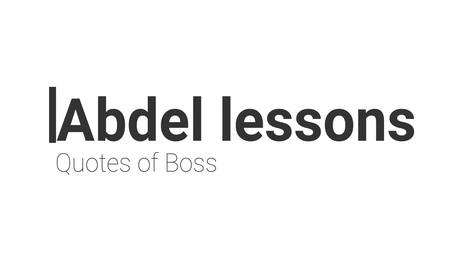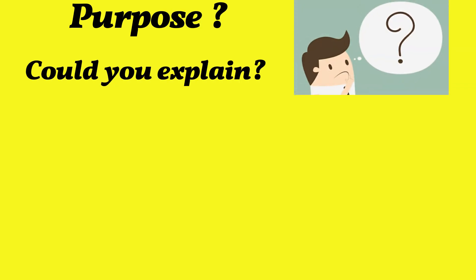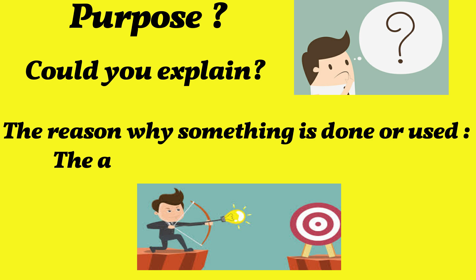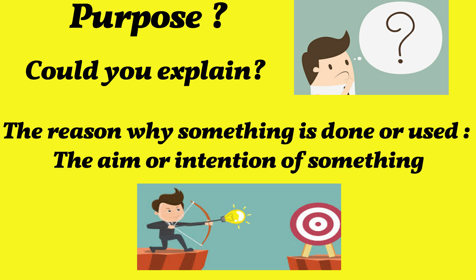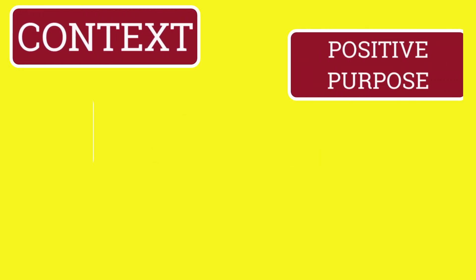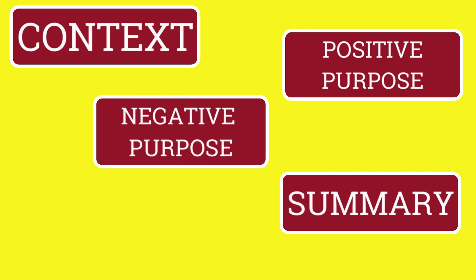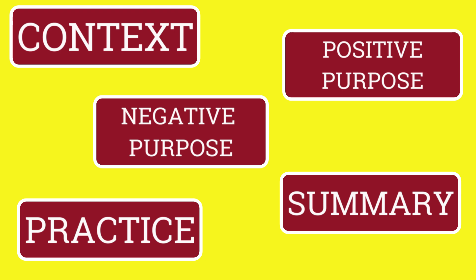Hi everyone, and welcome back for another lesson. Today's lesson is about expressing purpose. It's all about the reason why something is done or used — the aim or intention of something. The components of this lesson are: context, positive purpose, negative purpose, summary, and practice.